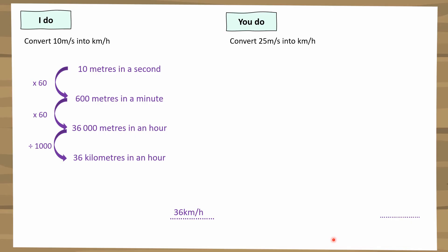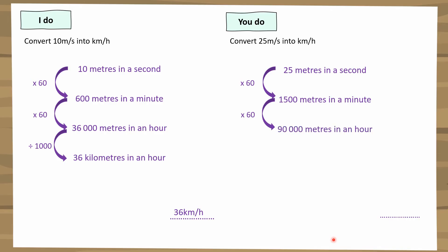Let's go through the answer. I've got 25 metres in a second. Let's convert the seconds into hours first. 25 metres every second — 60 times that amount in a minute is 1,500 metres in a minute. Then 60 times that again for an hour gives 90,000 metres in an hour. And 90,000 metres — what is that in kilometres? It is 90 kilometres. So that's the answer: 90 kilometres per hour.